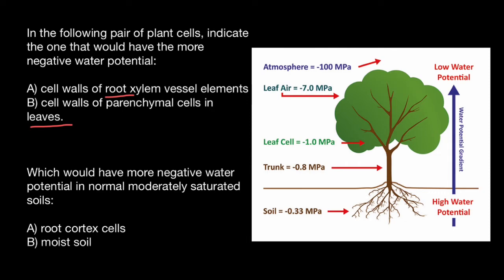Now as you see, according to our question, in the following pair of plant cells indicate the one that would have more negative water potential. In the leaves, water potential is always going to be more negative than in the root system. So, hence our choice is variant B.